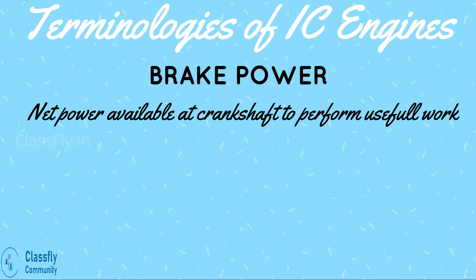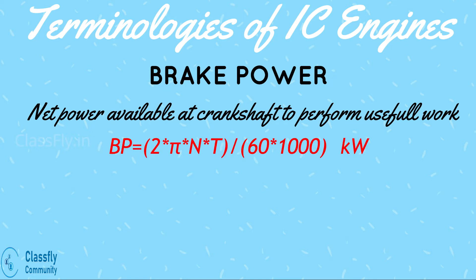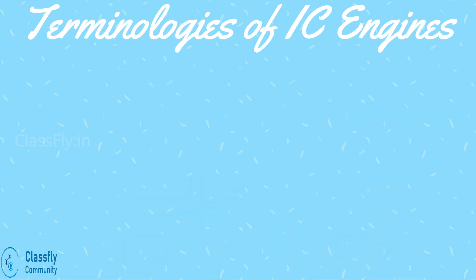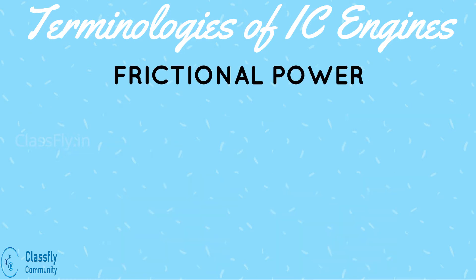Brake power can be given by the formula 2πNT / 60,000, where N is the speed of the engine and T is the torque. The torque is measured by using a dynamometer.